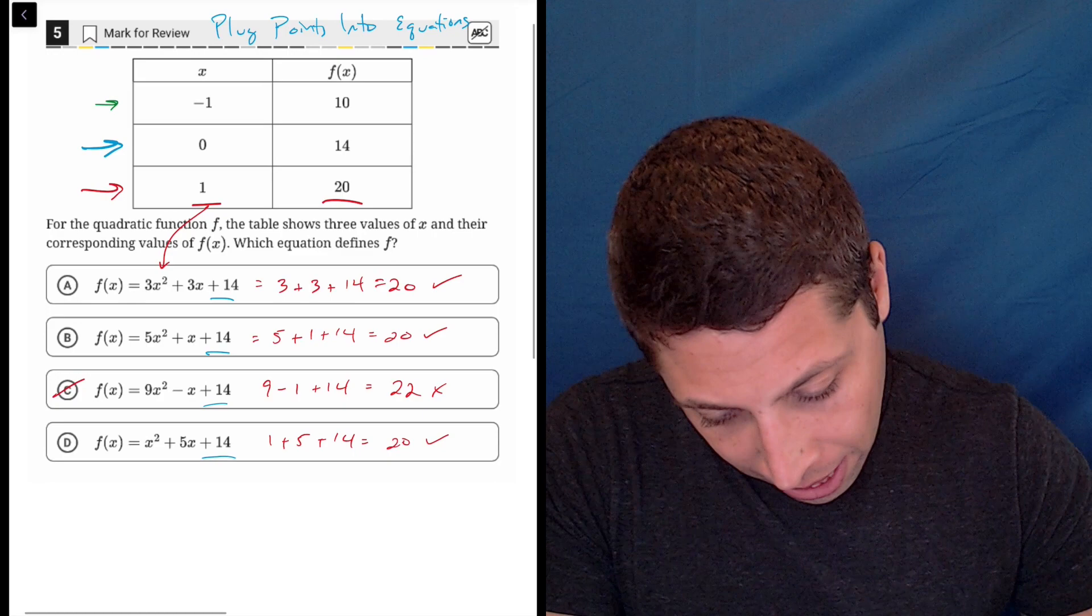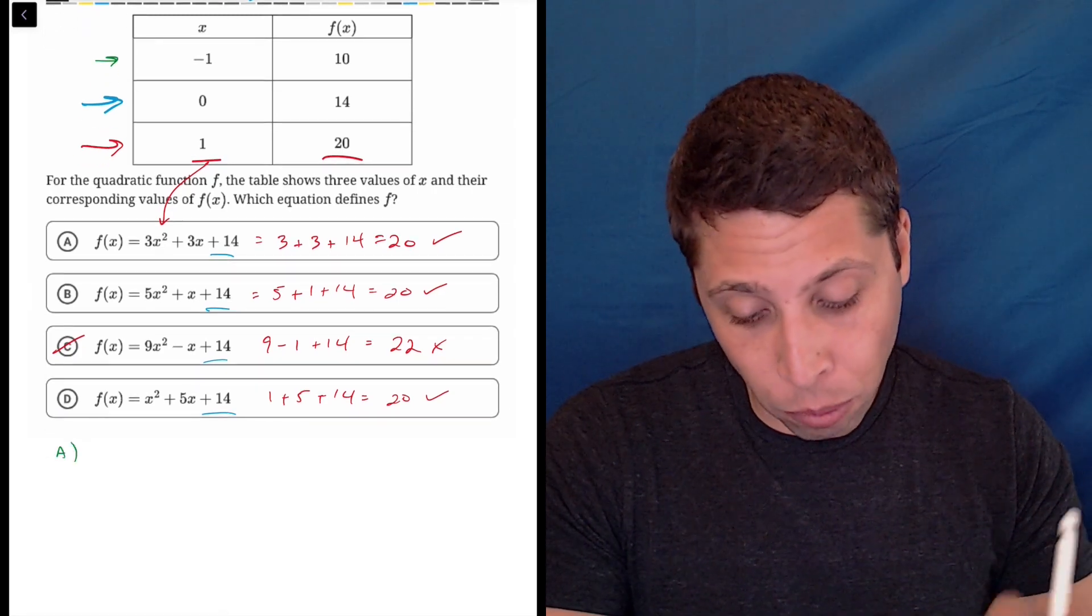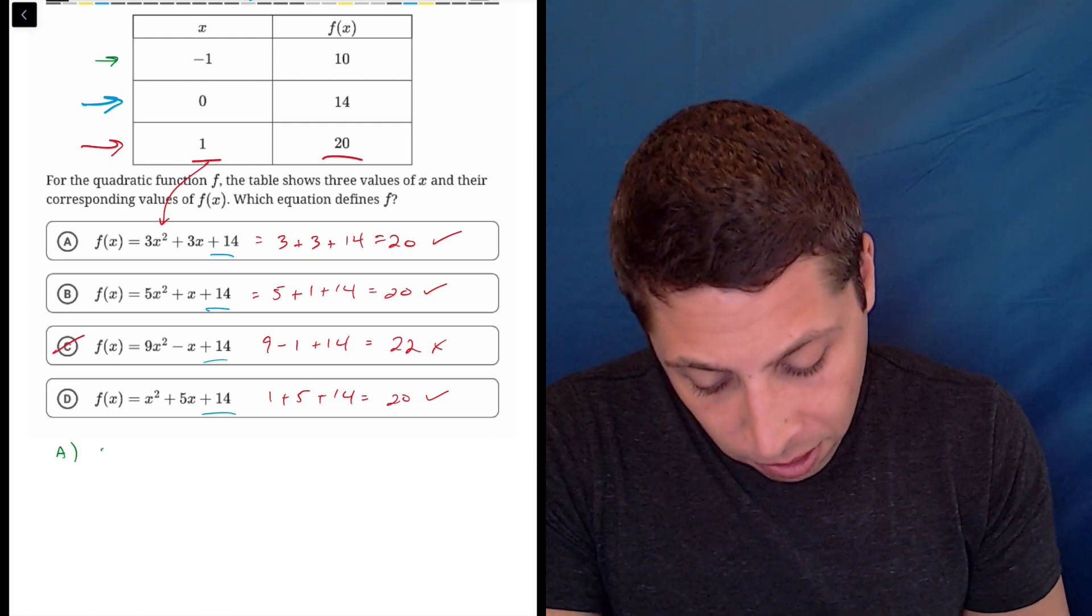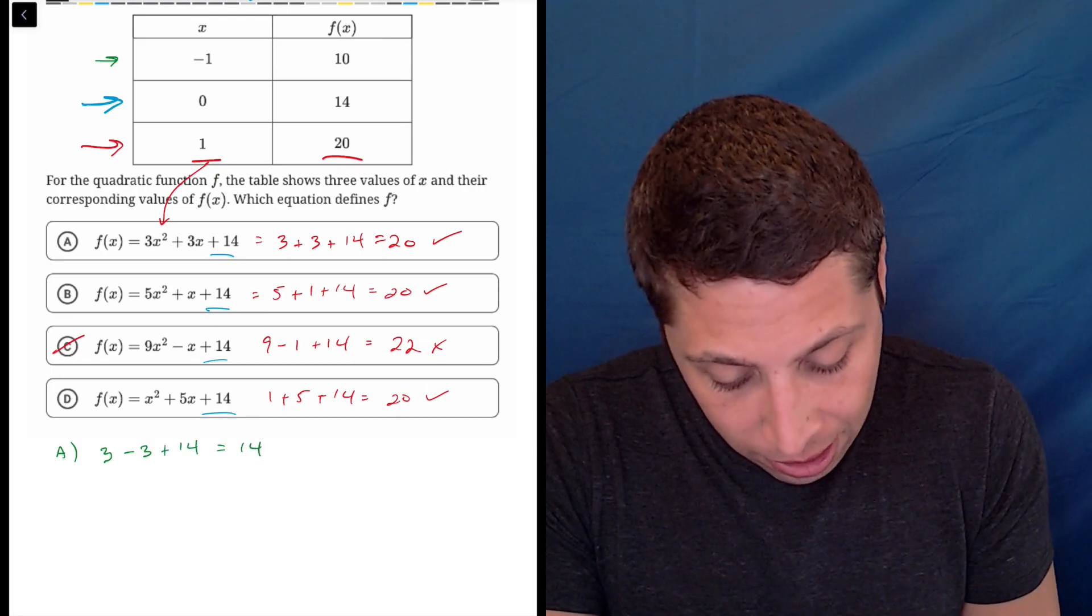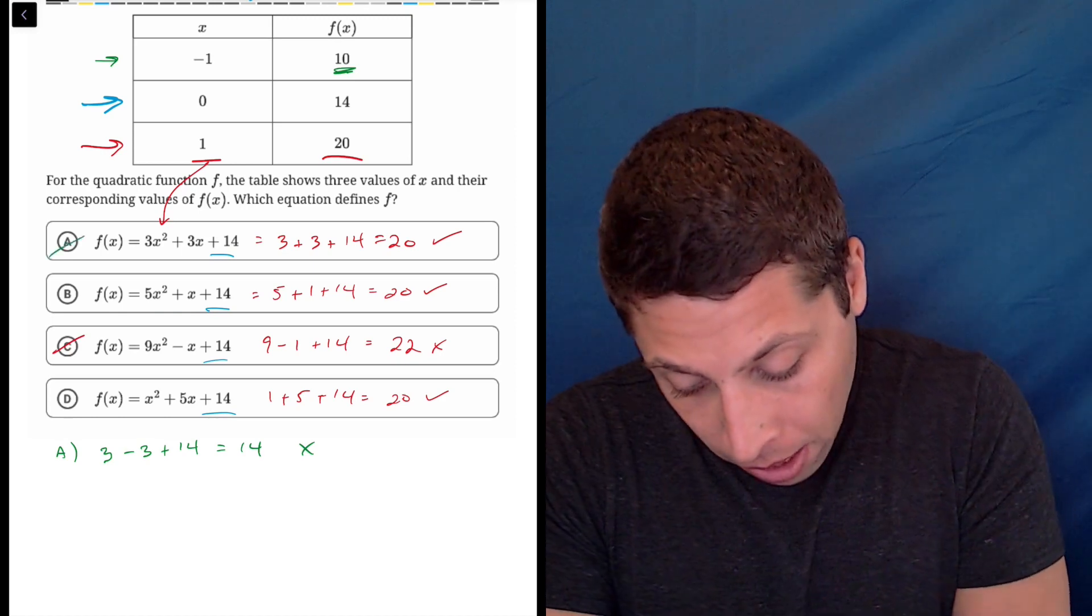So I'm going to come down here and do A so that I have more space. So now I just got to be really careful. If you have to write this out in more detail, go for it. Negative one squared is positive one. So this is three minus three plus 14. So that's 14 and it needs to be 10. So no, that does not work. Cross out A.